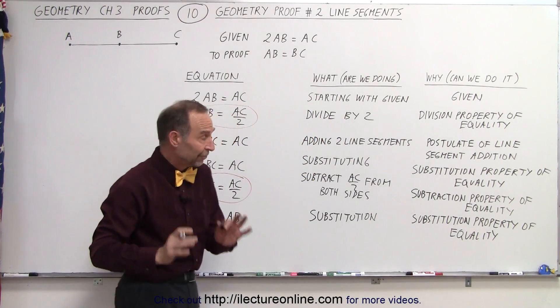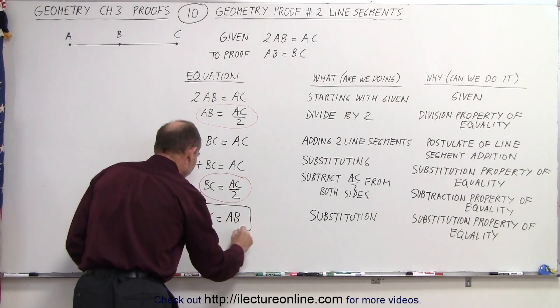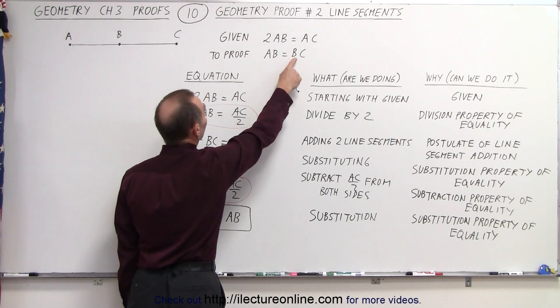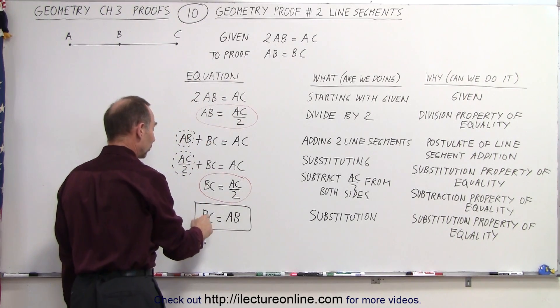And now that I've done that, let's take a look over here. And notice that's exactly what I wanted to prove in the first place. I wanted to show that AB equals BC. And so therefore, BC equals AB.